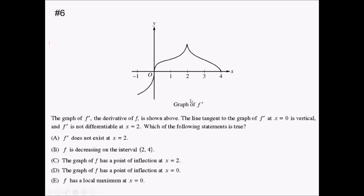On this problem, we're given the graph of f prime. They're telling us the line tangent to f prime at x equals zero is vertical, so we have a vertical tangent line. They're also telling us f prime is not differentiable at x equals two, so that must be a cusp or a corner. Based on all this, we want to know which answer has to be true. Choice A: f prime does not exist at x equals two. Well, f prime does exist at x equals two — here's the graph of f prime, here's x equals two, we have a solid line right there. So this is a false statement.